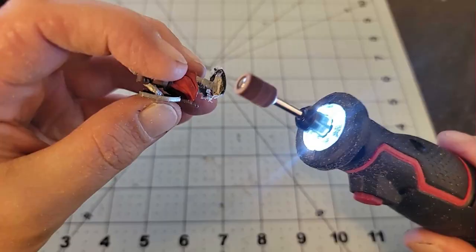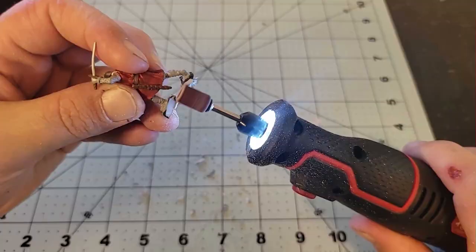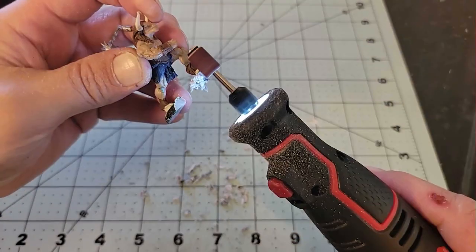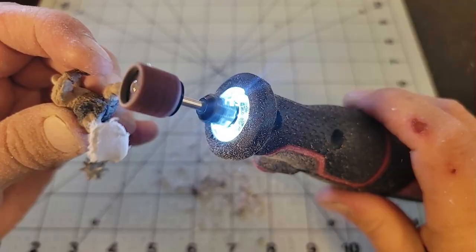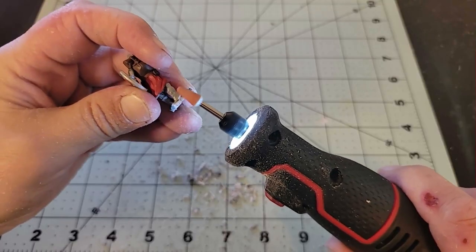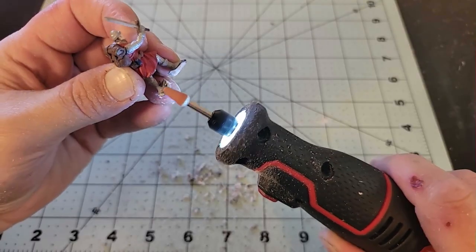Once I got it to the point where I wasn't comfortable moving forward, I switched to a sanding tool and used it to slowly whittle down the rest of the plastic around the feet. I didn't get everything, but again, I didn't want to risk messing anything up.